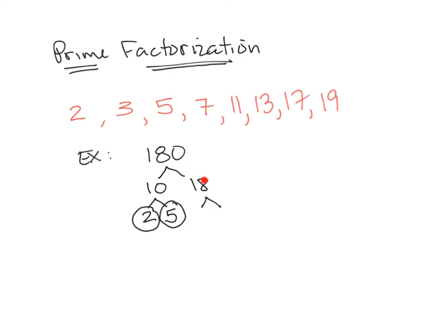Let's ask about 18. Any two numbers other than 1 and itself that we can multiply together to get 18? How about 3 times 6? That's one way. There might be another way, but that's one way that comes to my mind. 3 times 6. Let's look at the end of those branches. Is 3 prime? You betcha. Circle it. Is 6 prime? No. Give it branches.